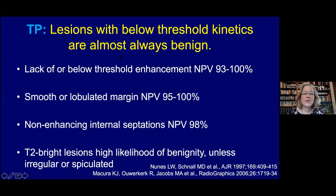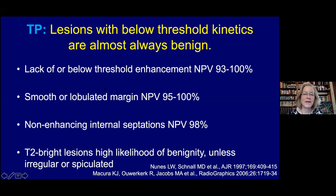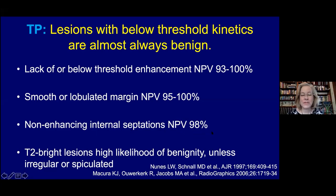Lesions with below-threshold kinetics are almost always benign, though some low-grade malignancies—like low-grade DCIS or invasive lobular cancer—can occasionally have below-threshold kinetics. Based on the literature, below-threshold or lack of enhancement has a negative predictive value of 93 to 100%. A smooth lobulated margin, non-enhancing internal septations, and T2-bright signal all carry very high negative predictive values. However, if T2-bright lesions are irregular, spiculated, or show rim or nodular enhancement, they become suspicious.